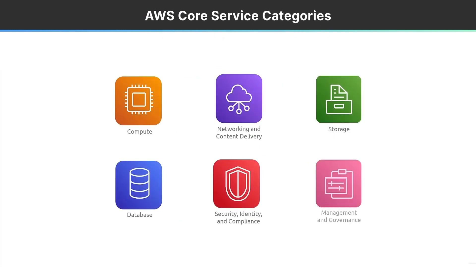There are core service categories: compute, storage — which could also be data — networking and content delivery for internet access and controlling firewalls and security, and databases in the lower left, ranging from cutting-edge options like MongoDB to traditional ones like Oracle and Microsoft. Then you've got the things needed to make those four categories work: security, identity, and compliance, plus management and governance — because someone needs to manage, monitor, and patch these systems.